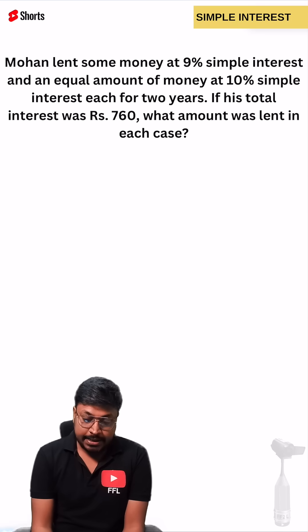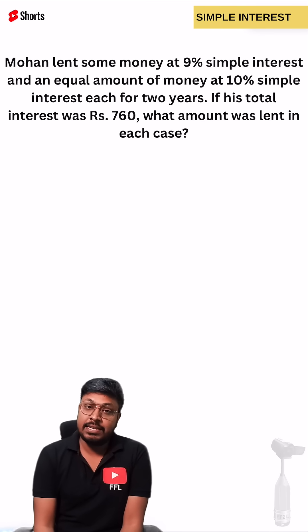Mohan lent some money at 9% simple interest and an equal amount of money at 10% simple interest for 2 years. If the interest was Rs. 760, what was the amount that was lent in each case?